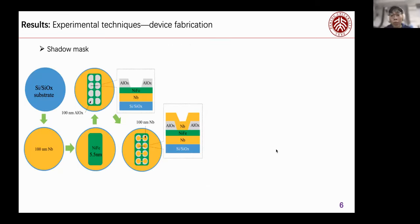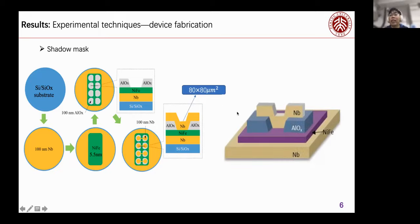Let me introduce our results. First is the device fabrication. We use the shadow mask to grow the niobium-palladium and niobium Josephson Junction. The thickness of our niobium and palladium layer is about 5.5 nanometers, and the final Josephson Junction's size is about 80 times 80 micrometers. This is our sample.